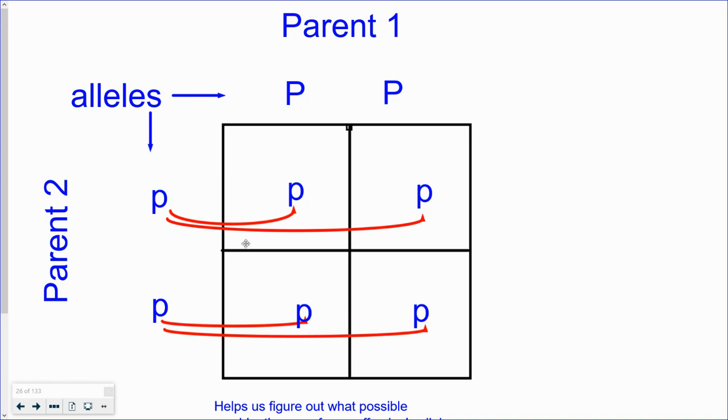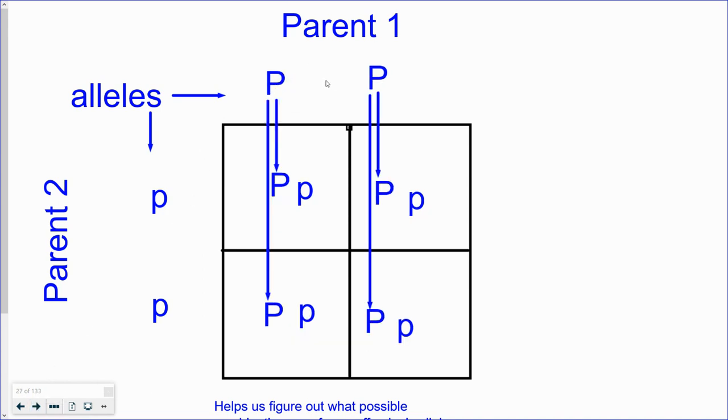Remember, no matter what, this is a probability table. So parent number two, or the mom in this case, who had the white characteristics, is only passing on white DNA to the offspring. The male flower, the true breeding purple, is only passing on purple.